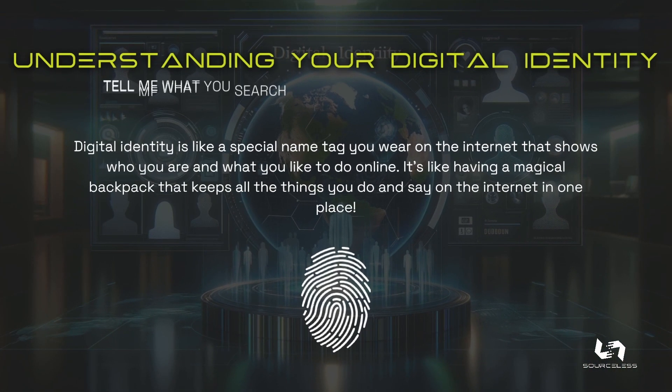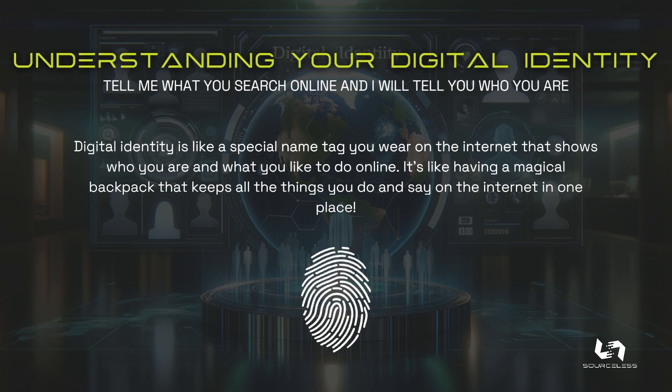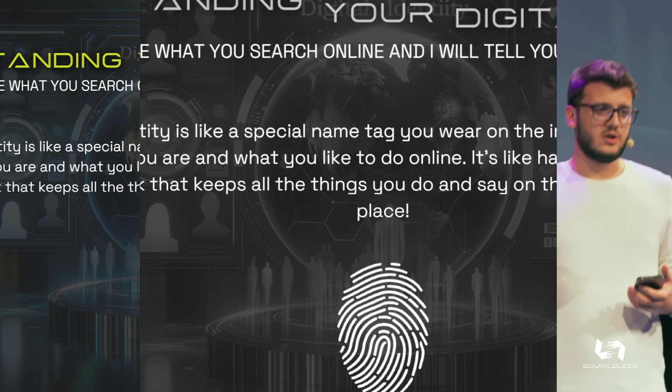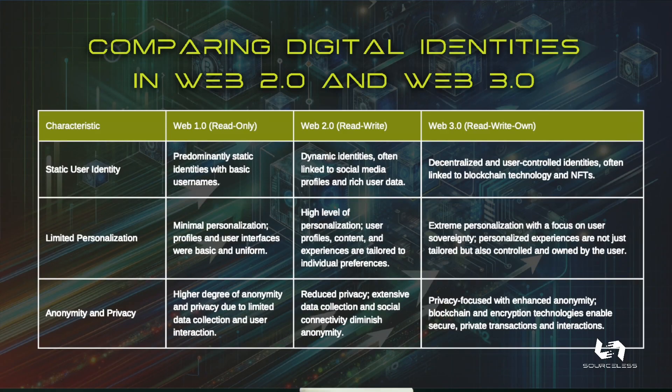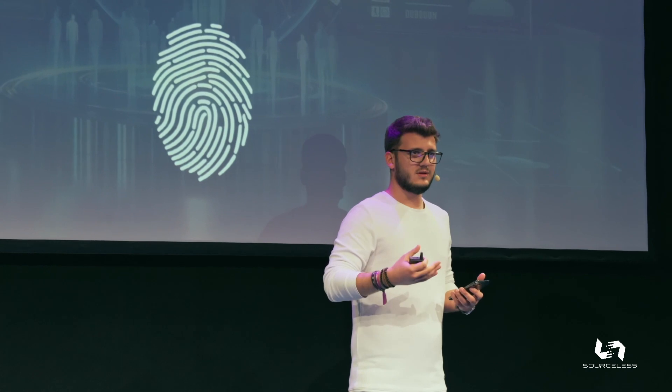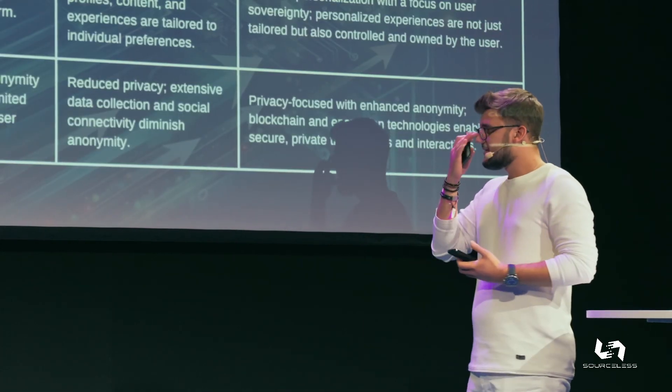What is digital identity and how can you migrate it to Web3? A digital identity is like a backpack that you carry with you — it contains everything you said, everything you wrote, everything you ever thought, and it's written on the blockchain. You have two types of digital identities: the Web2 digital identity, which is controlled by the government and you are owned by the government; and the Web3 digital identity, which is decentralized. That's what Sourceless does — creates a new digital identity and gives you full ownership of your data.